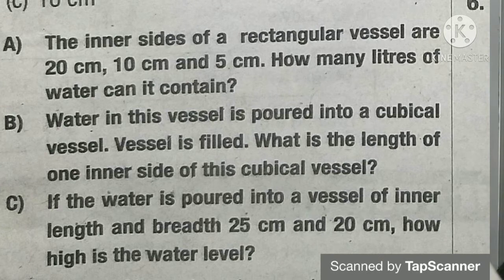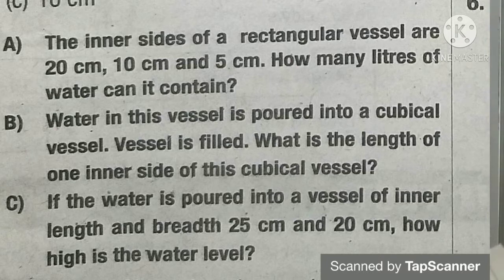Inner sides 20, 10, and 5 — a rectangular vessel. B part: water in this vessel is poured into a cubical vessel and the vessel is filled. What is the length of one inner side of this cubical vessel?